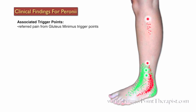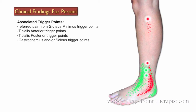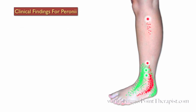The referred pain from gluteus minimus trigger points commonly activates Peronei trigger points. Trigger points in the tibialis anterior, tibialis posterior, gastrocnemius, and soleus are functionally related to trigger points in the Peronei muscles. Some common misdiagnoses for active Peronei trigger points include ankle sprain and lateral compartment syndrome.